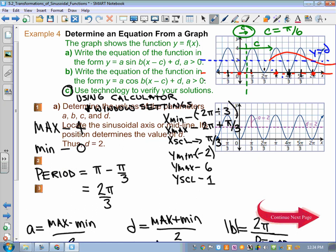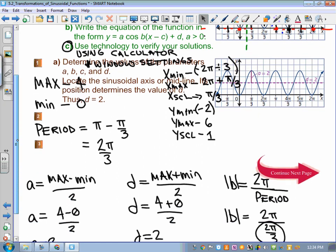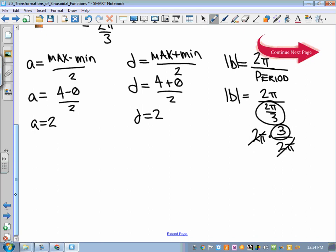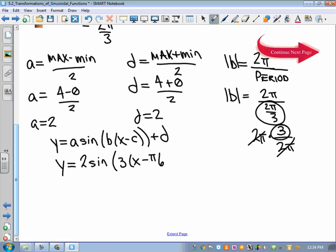Now, armed with that information, we are able to do this for sine. So if I look at Y equals A times the sine of B times X minus C plus D, we can identify that equation is Y equals 2 times the sine of 3 times X minus pi over 6 plus 2.